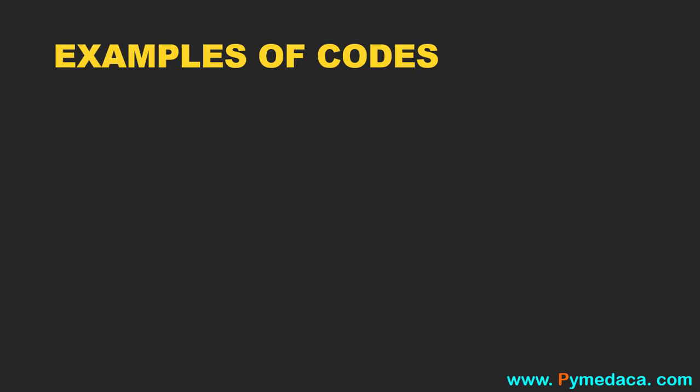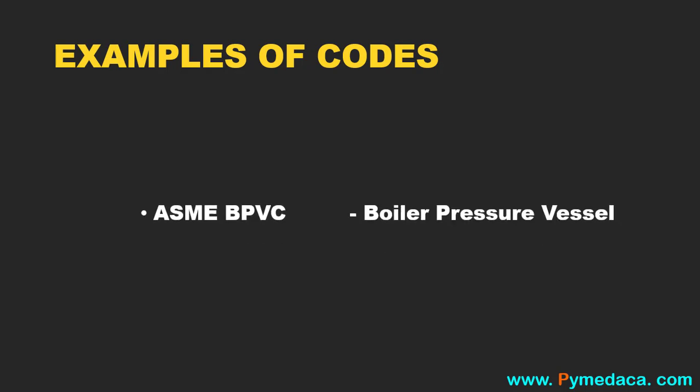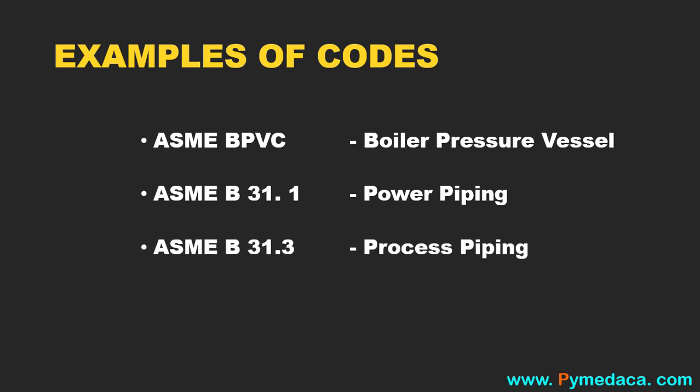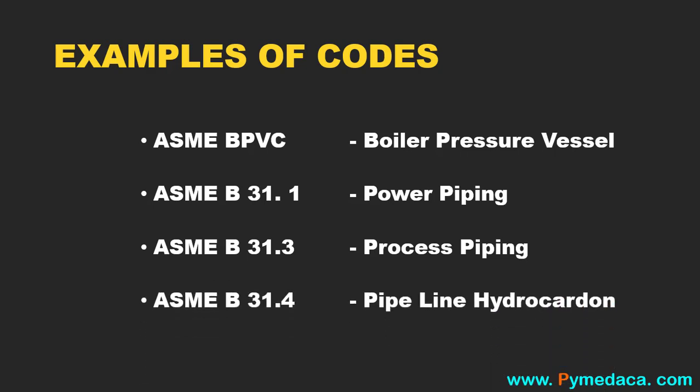Let us see some of the international codes used in industries. ASME BPVC is a boiler pressure vessel code for pressure vessels. ASME B31.1 is a power piping code for the power sector. ASME B31.3 is a process piping international code. And ASME B31.4 is a pipeline hydrocarbon code. There are various international codes available for different requirements and different industries.